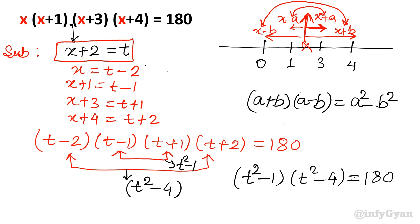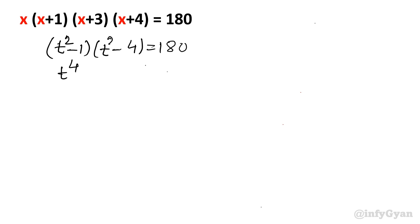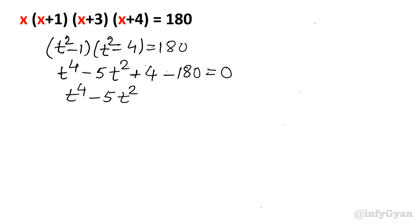Now I will open the brackets. (t²−1)(t²−4) equals 180. Expanding: t⁴ − 4t² − t² + 4, which gives t⁴ − 5t² + 4. Taking 180 to the left side: t⁴ − 5t² − 176 is equal to 0.